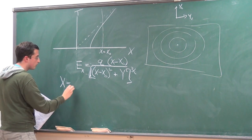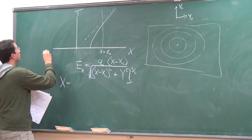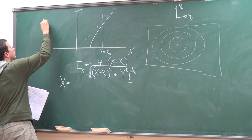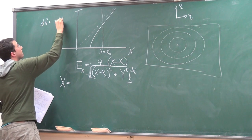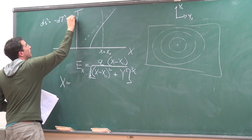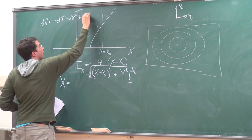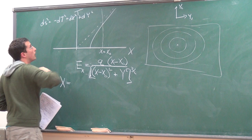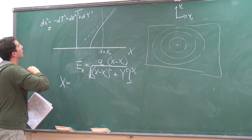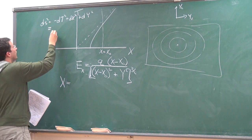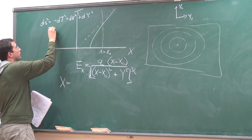If we recall from yesterday, I'm going to write down the electric field again. We have transverse directions, dy squared. In Rindler coordinates, the ones I used yesterday look like this.